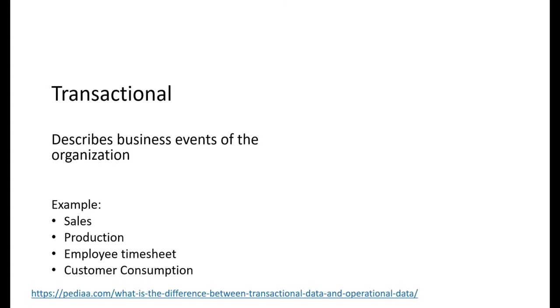Let me zoom in on the type of data we're looking at. I talked about operational data, so let me start by talking about transactional data first. Transactional data describes your business events and your organization — typical examples are sales, production, employee timesheets, and customer consumption if you're a utility. It's data you would see in a report somewhere in a company.